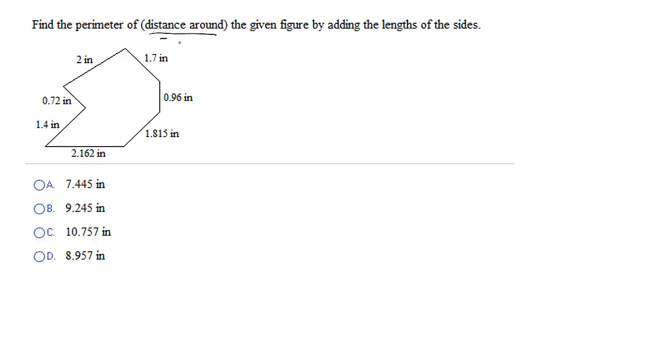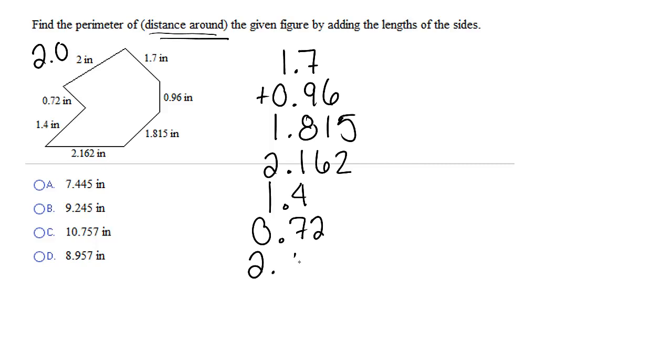Find the perimeter of or distance around the given figure by adding the lengths of the sides. Remember perimeter is when we add all the sides up. So let's do that. We're going to have 1.7 plus 0.96 then 1.815. Do you see that I'm lining my decimals up? 2.162, 1.4, 0.72, and then 2. Remember 2 is the same thing as 2.0. So I'm going to put it here. Let's just double check that we have all our numbers. 1, 2, 3, 4, 5, 6, 7 numbers. 1, 2, 3, 4, 5, 6, 7 numbers. All right, let's add. In this case, it's going to help us if we start putting some zeros in here. One reason I do this is just to make sure that I add everything in this column.